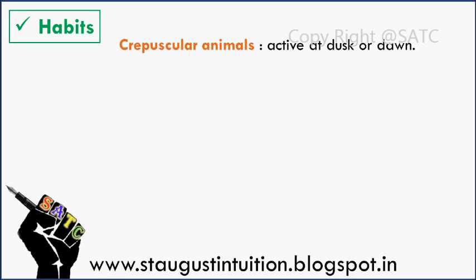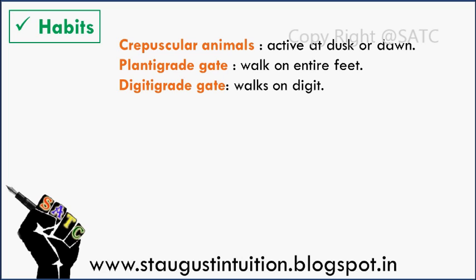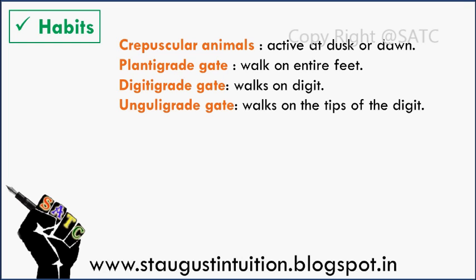Habits are crepuscular — animals active at dawn and dusk. This is a plantigrade gait. Digitigrade gait — walking on the tips of the digits.